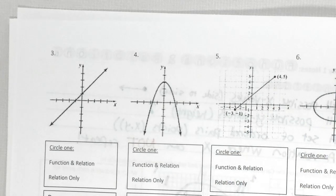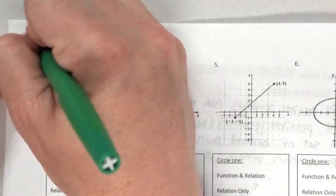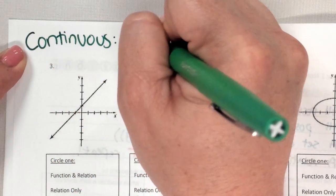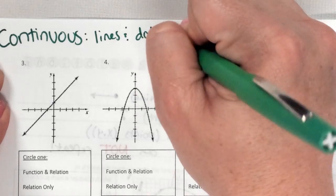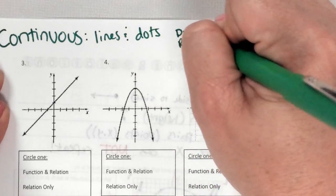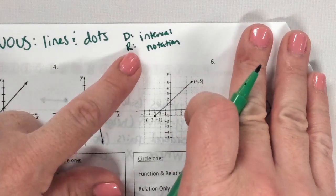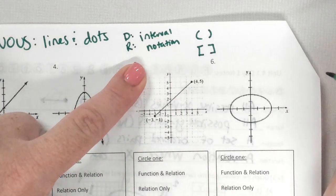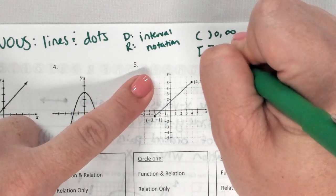Now we have lines, so these are not discrete — we call this continuous. When we write domain and range now we call this interval notation. You use parentheses when you have an open dot or infinity, and you use a square bracket when you have a closed dot or it touches.